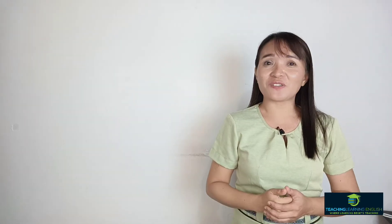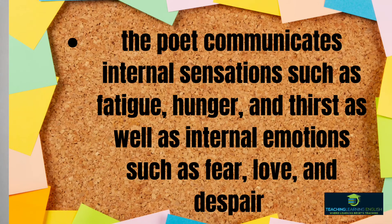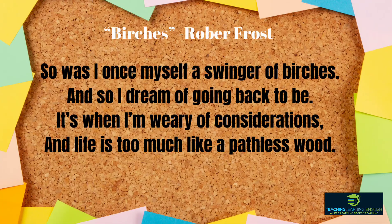The last is organic imagery. In this form of poetic imagery, the poet communicates internal sensations such as fatigue, hunger, and thirst, as well as internal emotions such as fear, love, and despair. This is one of the examples of organic imagery written by Robert Frost, and his poem is entitled 'Virtues.'